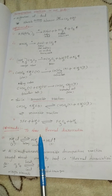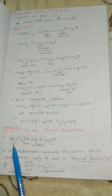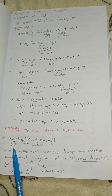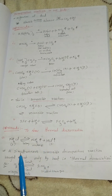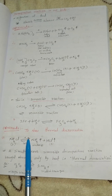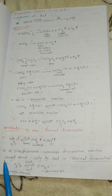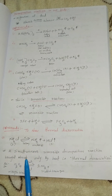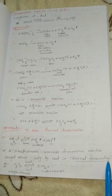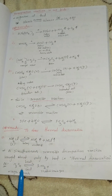Experiment to show thermal dissociation. NH4Cl forms ammonia plus HCl — this is a reversible reaction symbol. A simultaneous reversible decomposition reaction brought about only by heat is called thermal dissociation. For example, N2O4 gives N2O2.